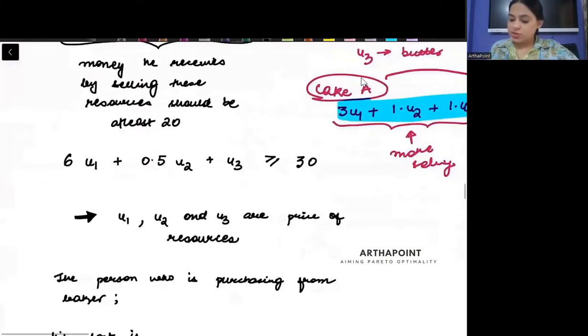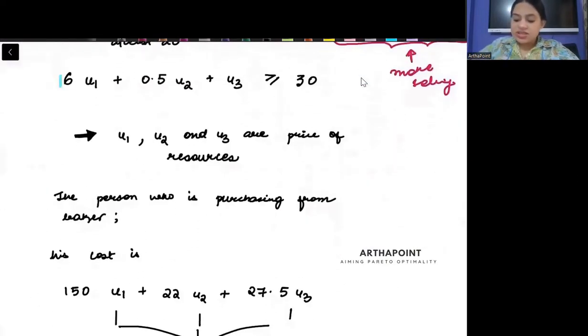Now look at the second equation. 6 flour × price of flour + 0.5 × price of sugar + 1 × price of butter should be greater than equal to the amount I can make by selling the cake.